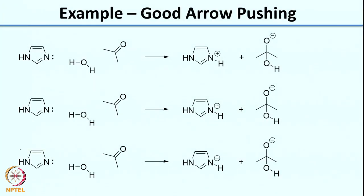Let us look at good examples and bad examples of arrow pushing. In this case my electron source is the lone pair on the nitrogen, so I can draw the arrow like this. Sometimes people show the oxygen reacting with the electron-deficient center by drawing an arrow from oxygen to the electron-deficient carbon to give the intermediate shown, and also showing movement here. The problem is you have not indicated what happens to the electrons in the existing bond — you have shown the nitrogen lone pair grabbing the proton and also shown the oxygen lone pair going to the electron-deficient center, but what is happening in between? This is not a good representation.